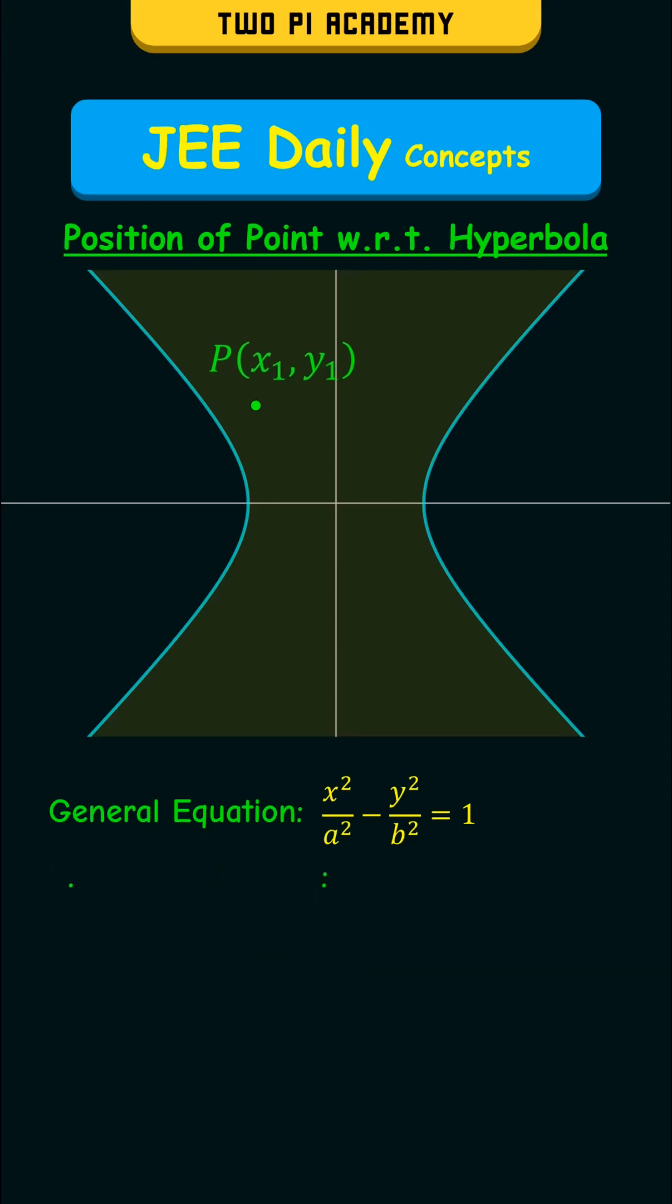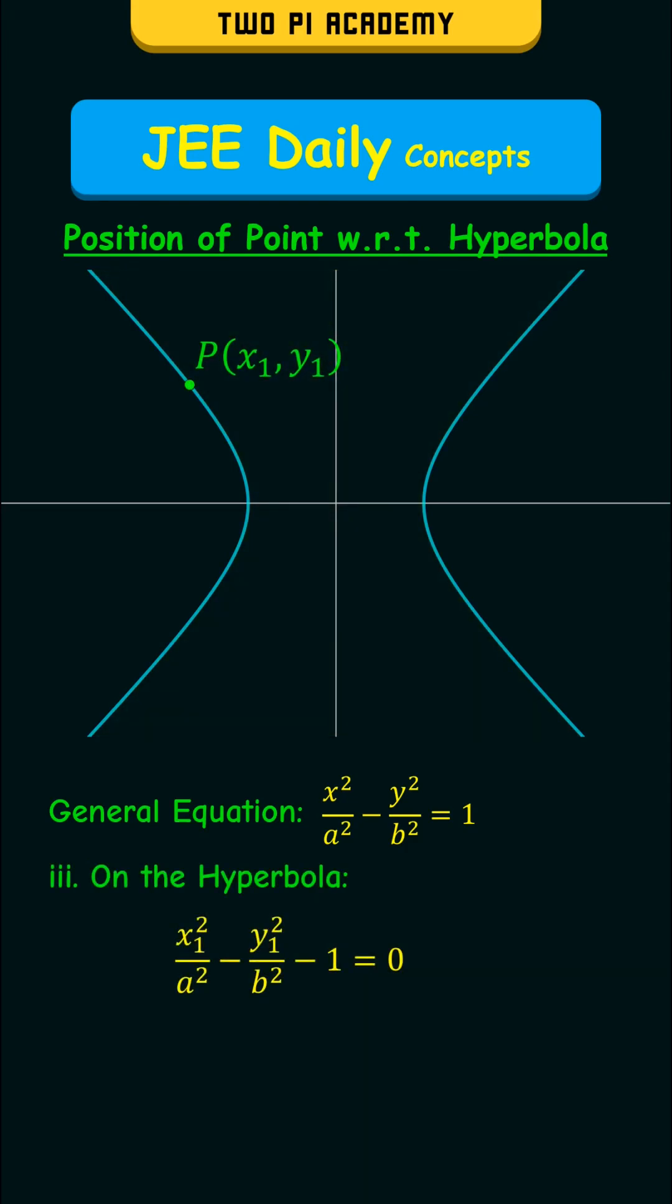And finally, when the point is on the hyperbola, x1 square by a square minus y1 square by b square minus 1 will be equal to 0.